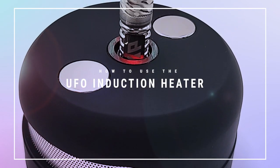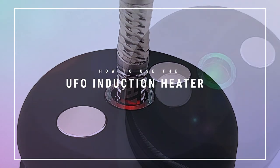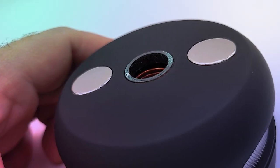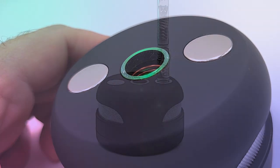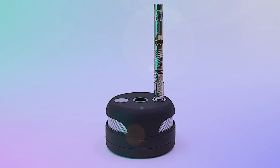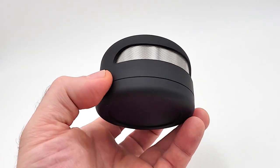The UFO induction heater is a super portable device made for Dynavap users who do not want to break the bank on their first induction heater. The UFO will allow you to put down your torch for a while and provide powerful, consistent heating on the go. This portable device fits in the palm of your hand. The rubbery finish will help you maintain your grip and protect the device from scratches and small falls.